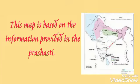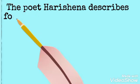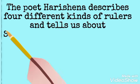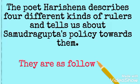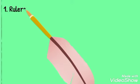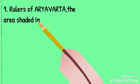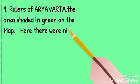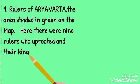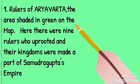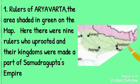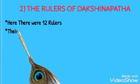Poet Hari Shena describes four different kinds of rulers and tells us about Samudra Gupta's policy towards them. First, the rulers of Arya Varta, marked in the area shaded in green on the map. There were nine rulers who were uprooted from their kingdoms and made a part of Samudra Gupta's empire.